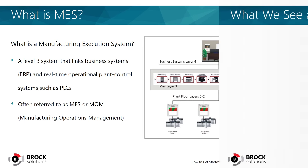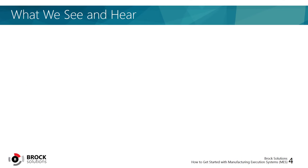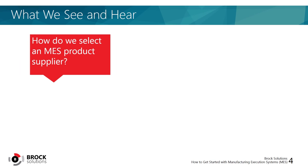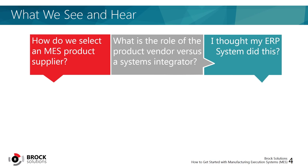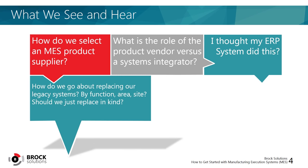What we often see and hear in the marketplace are organizations asking themselves: how do we make sure we're selecting the right MES product supplier? What role should our product vendor and system integrators play? Many organizations wrongly believe that their ERP system is already covering a lot of the typical MES functions. How do we modernize our manufacturing environment? How do we roll out new solutions across different areas and facilities? And should we improve how we operate, or just replace the same solutions?